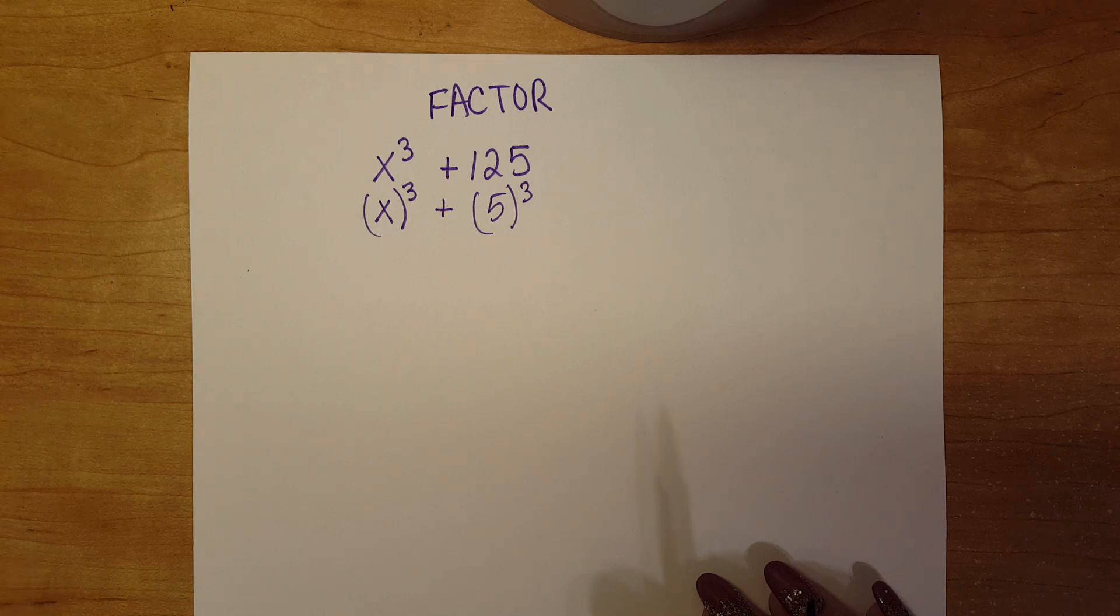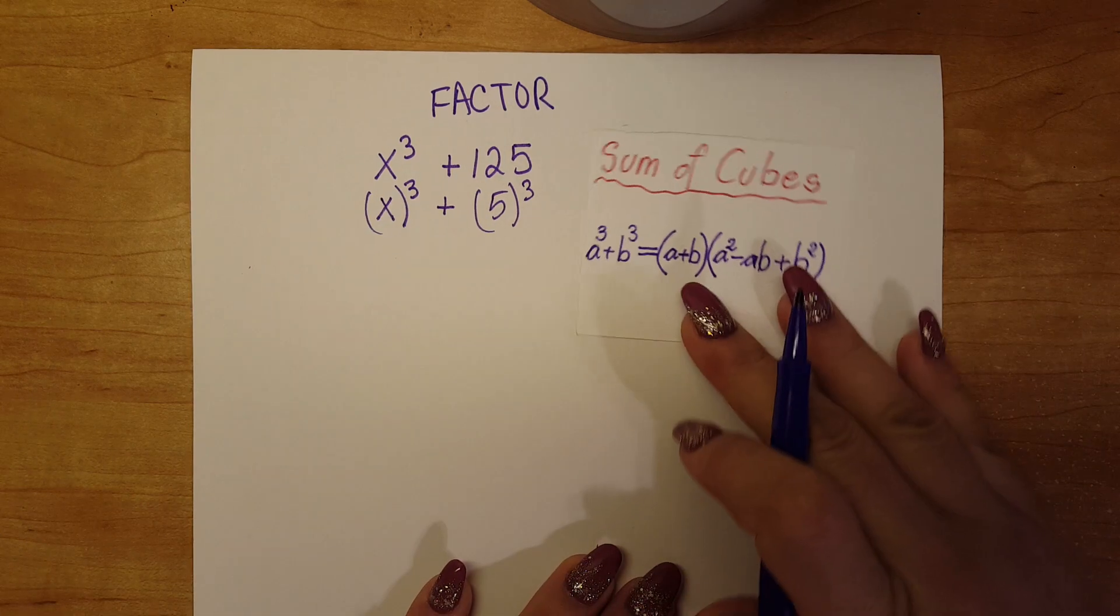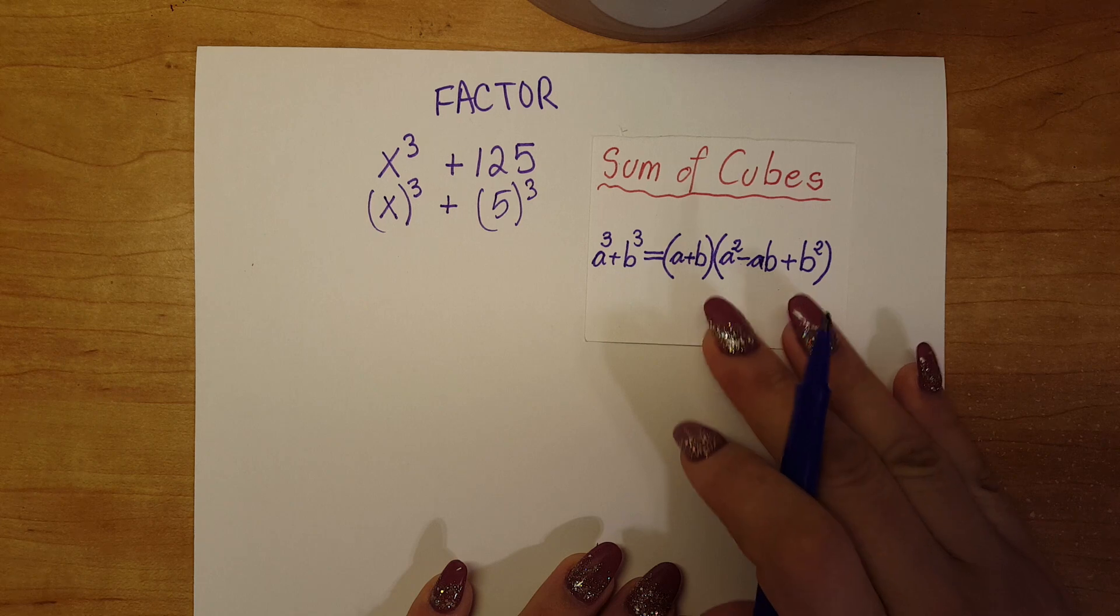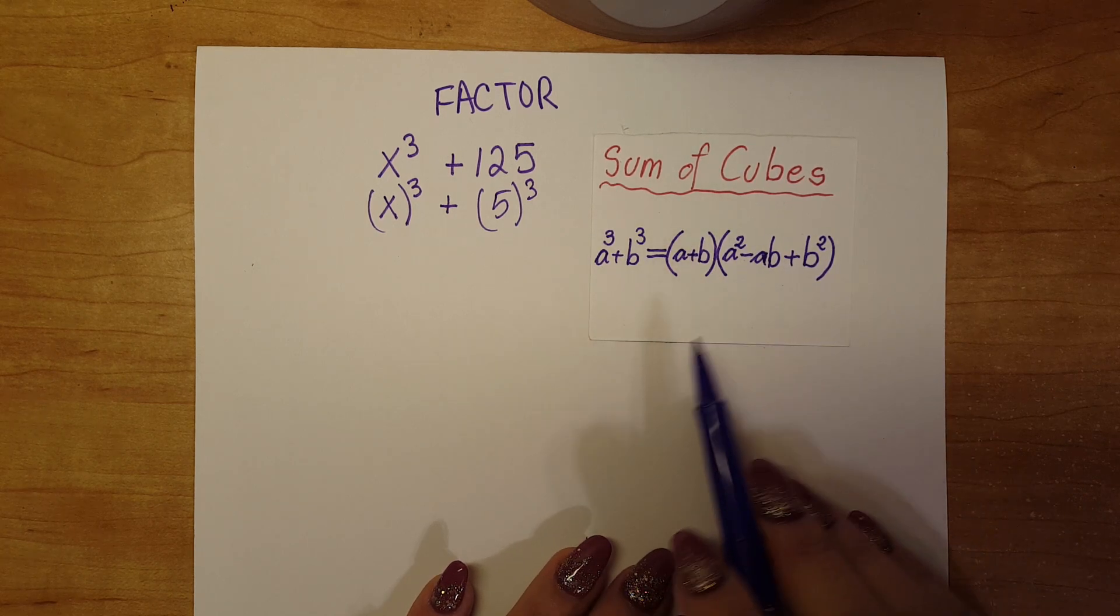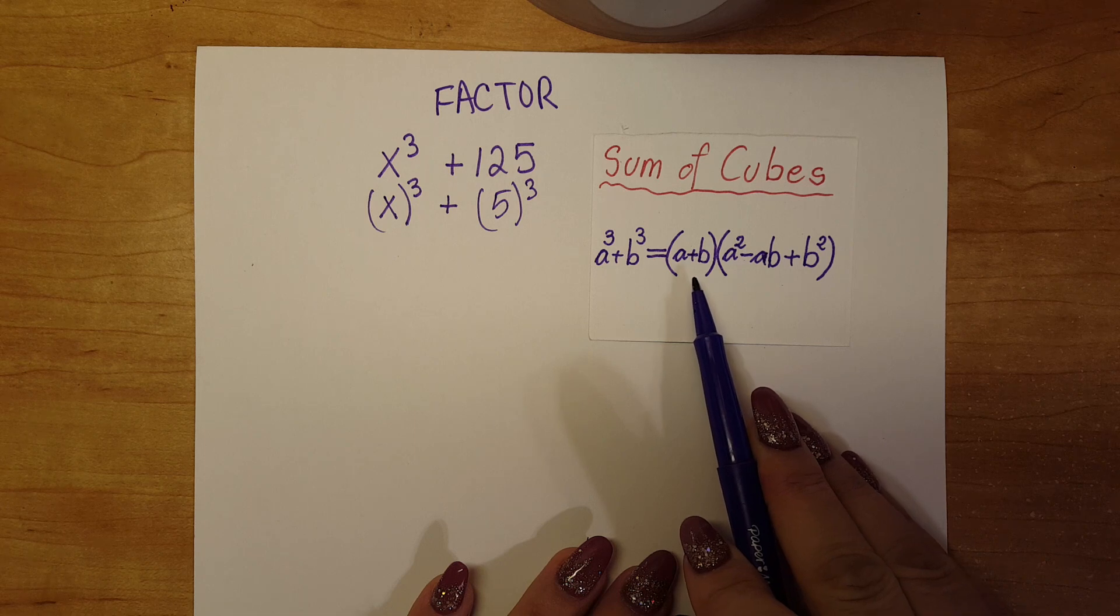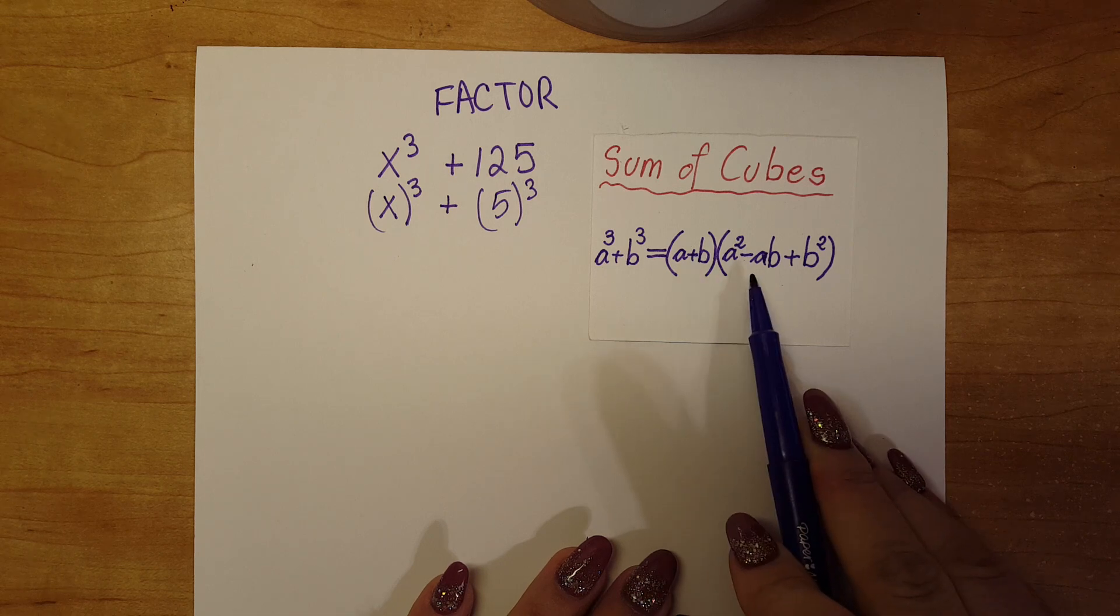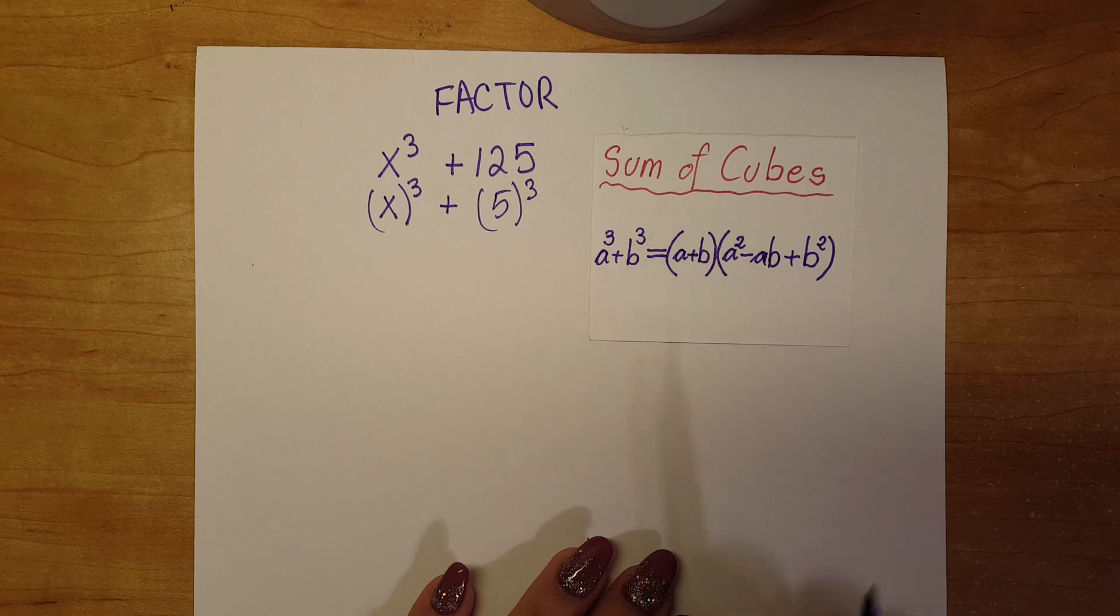So our sum of cubes property is if we have a cubed plus b cubed, that is the same thing as factoring this out as a plus b times a squared minus ab plus b squared.